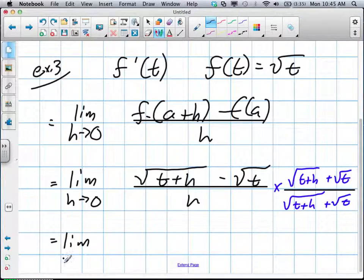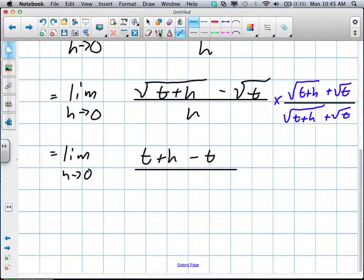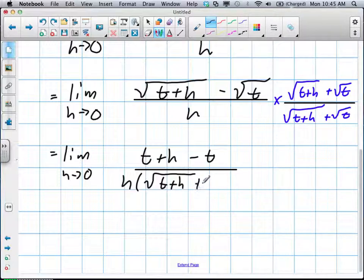On the top of our fraction, it's going to help us rationalize this expression. So we're going to be left with t+h-t, divided by - and instead of distributing that h, we're just going to keep it to the outside - h times [√(t+h) + √t].